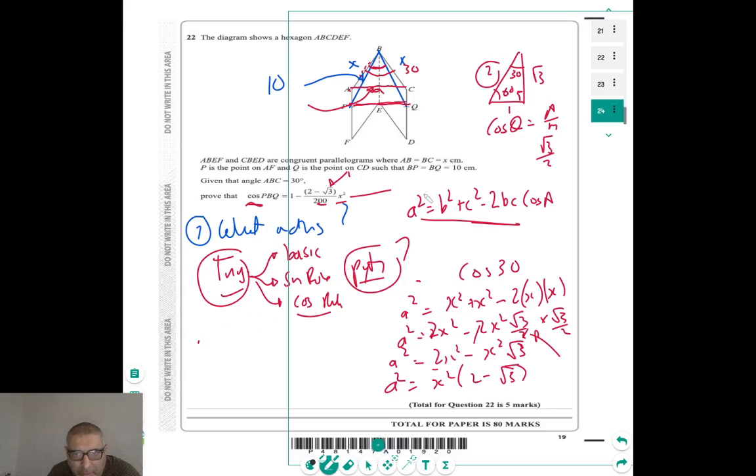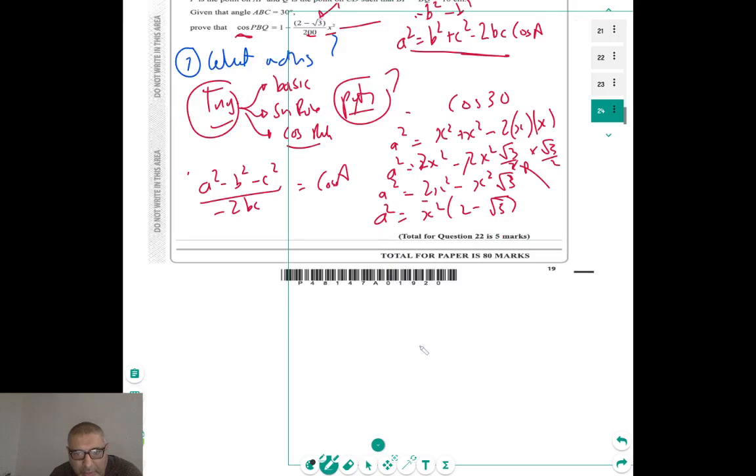So I'm going to go minus b squared. You can even memorize it. And if you don't like memorizing, you'd go a squared minus b squared minus c squared divided by minus 2bc. And that will give me cos a, right? And cos a is PBQ.